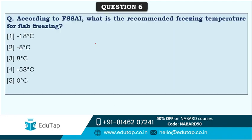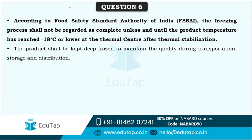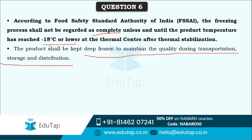Next question: according to FSSAI, what is the recommended freezing temperature for fish freezing? FSSAI has made standards for everything, including freezing temperature for fish. The correct answer is minus 18 degrees Celsius. FSSAI - the Food Safety Standards Authority of India - states that the freezing process is not considered complete until the product temperature reaches minus 18 degrees Celsius or lower. If the temperature is higher, the freezing process shall not be recorded as complete, and the product shall be kept deep frozen to maintain quality during transportation, storage, and distribution.